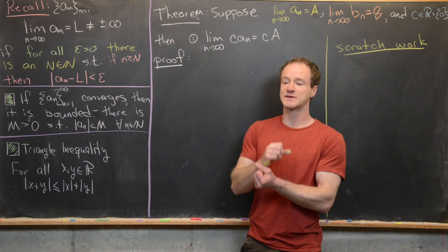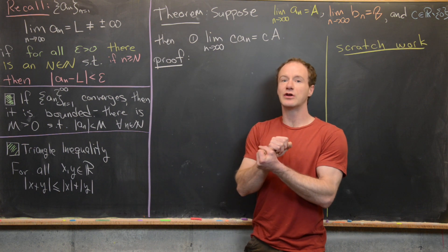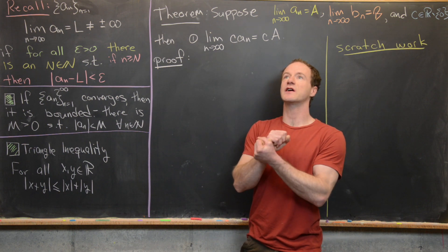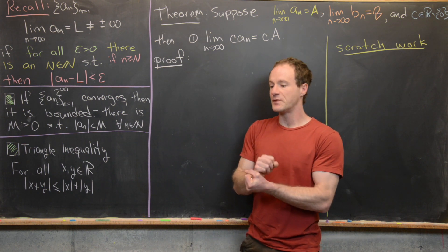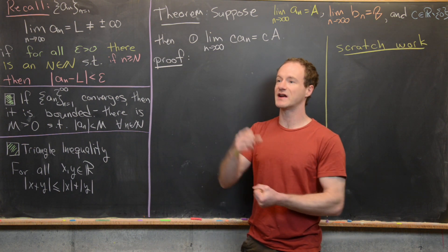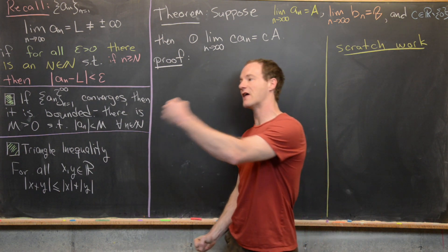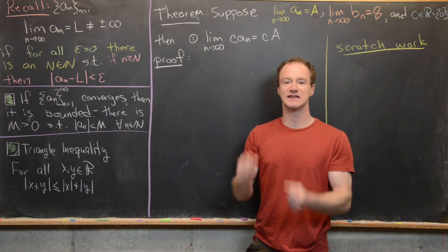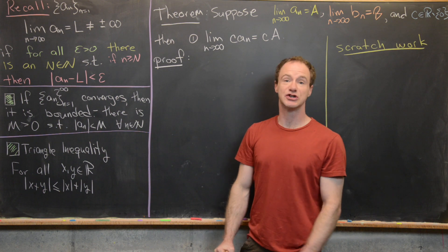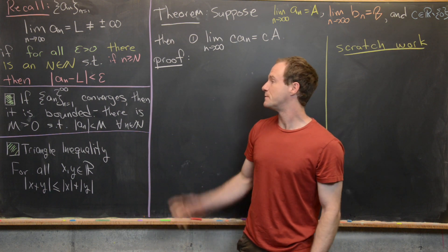In other words, for any epsilon you can pick which is very small, you can always find a point after which every member of the sequence is very close to that given limit.